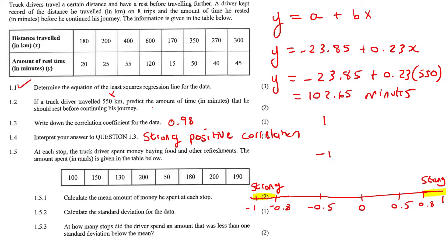At each stop, the truck driver spends money on food. The amount spent in rands is given below. At the first stop, the person spent 100 rand, 150 rand. Calculate the mean. Mean is easy. You just add all these numbers together and divide by how many numbers there are. You can also do it on the calculator. If you have to input all the data, it does work on the calculator, but I'm not going to go through that now.